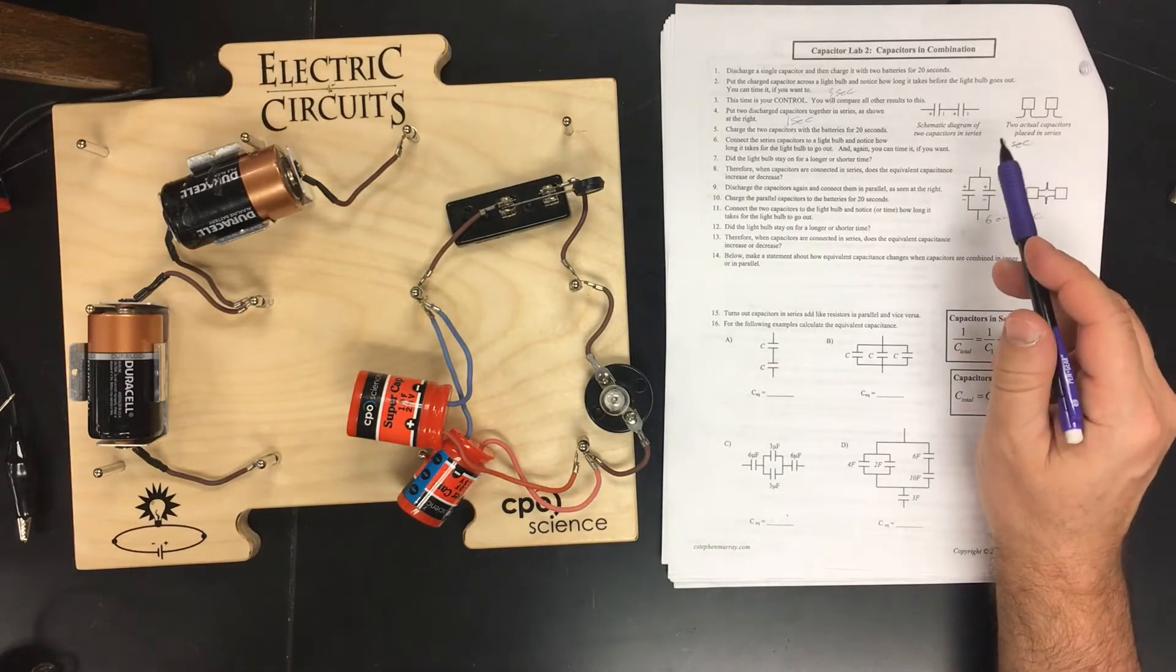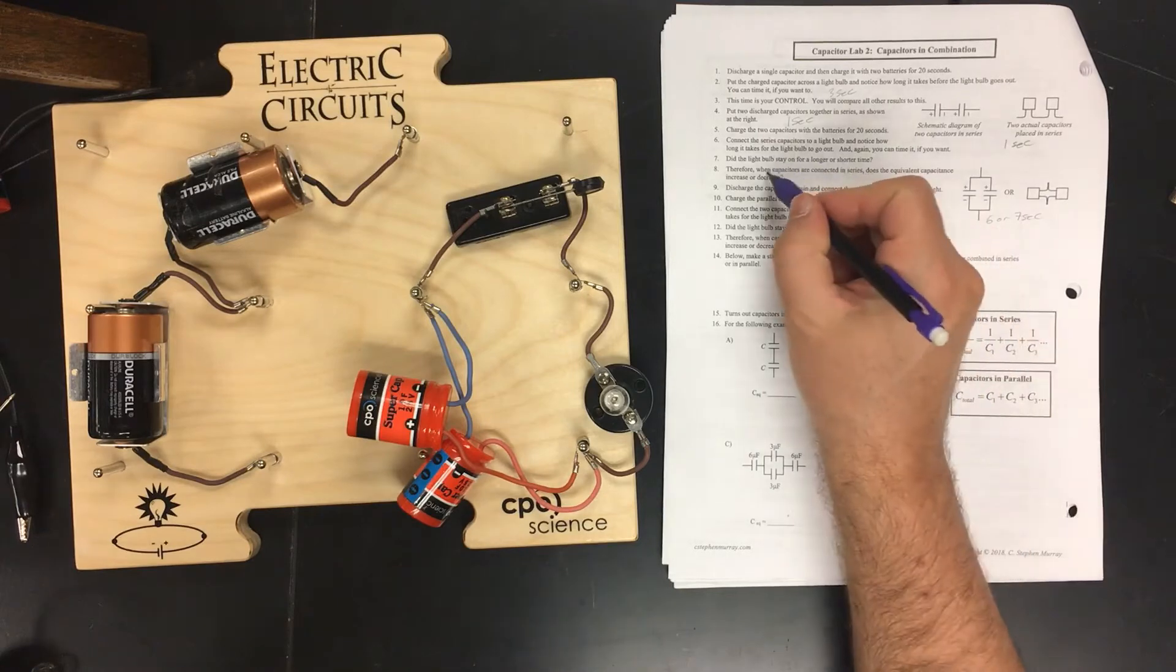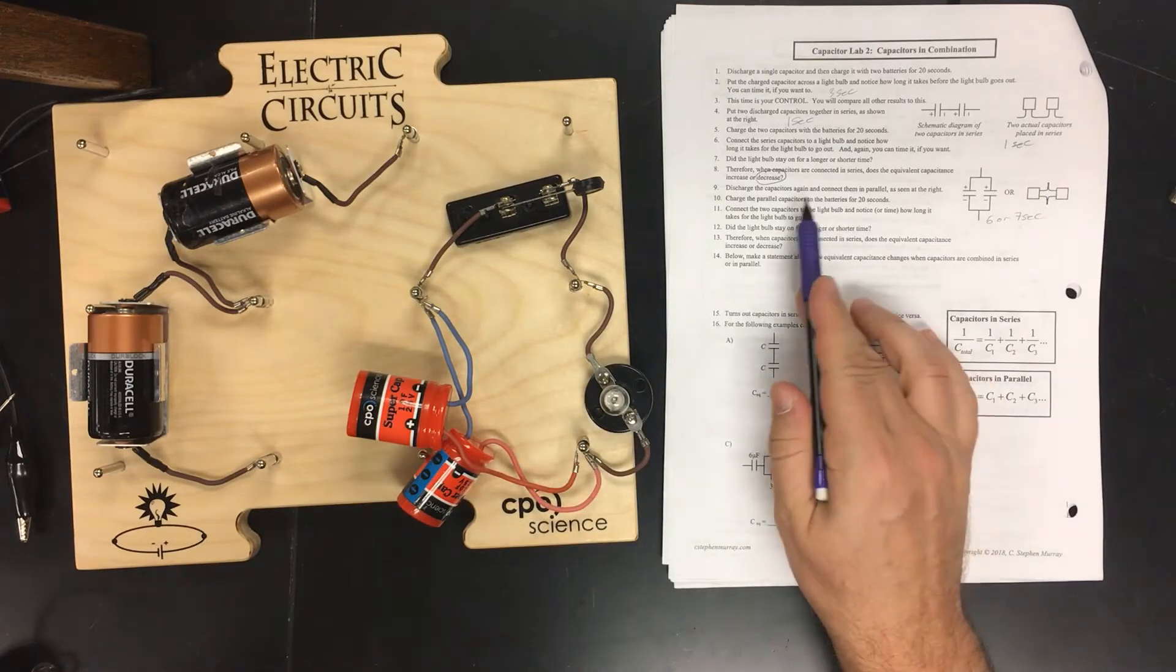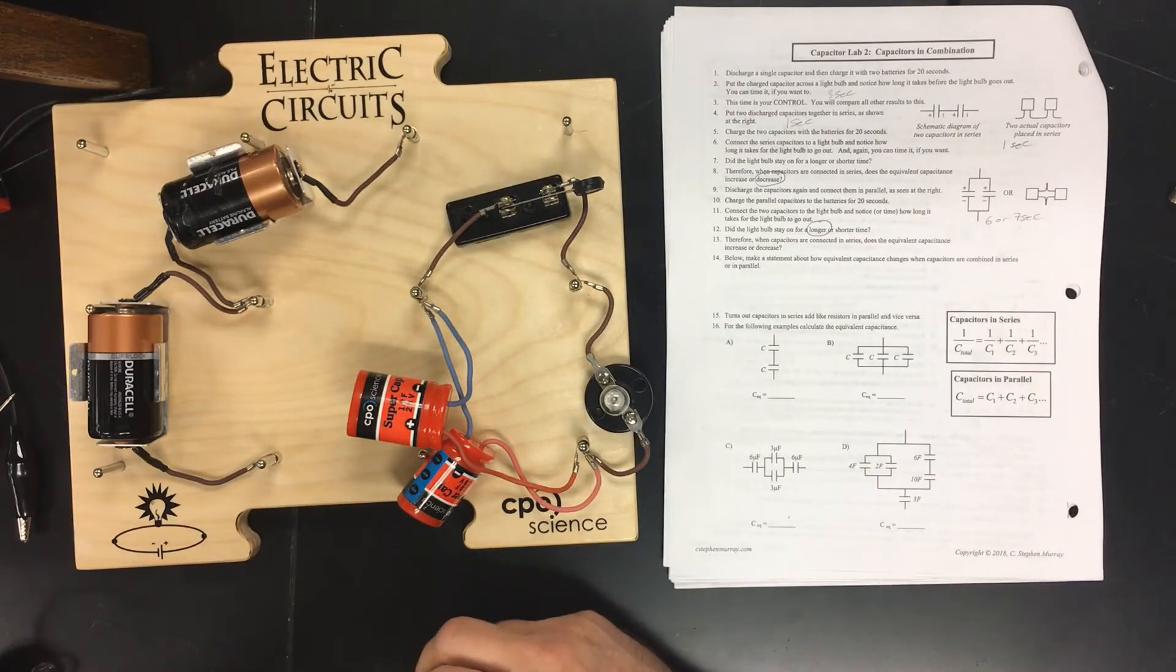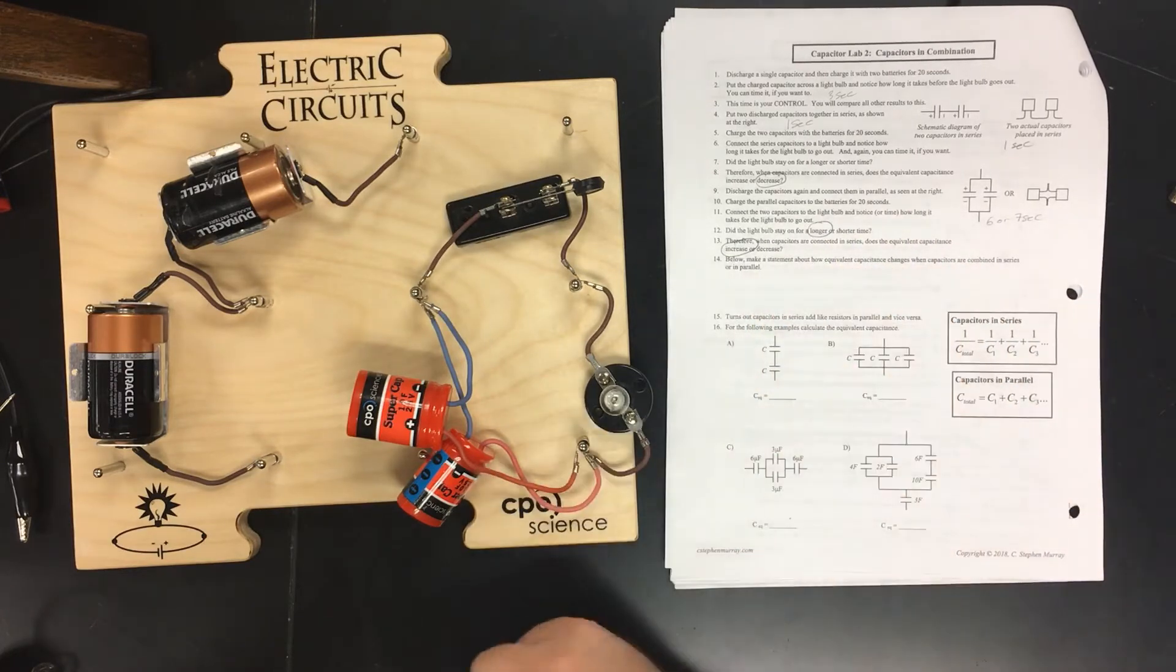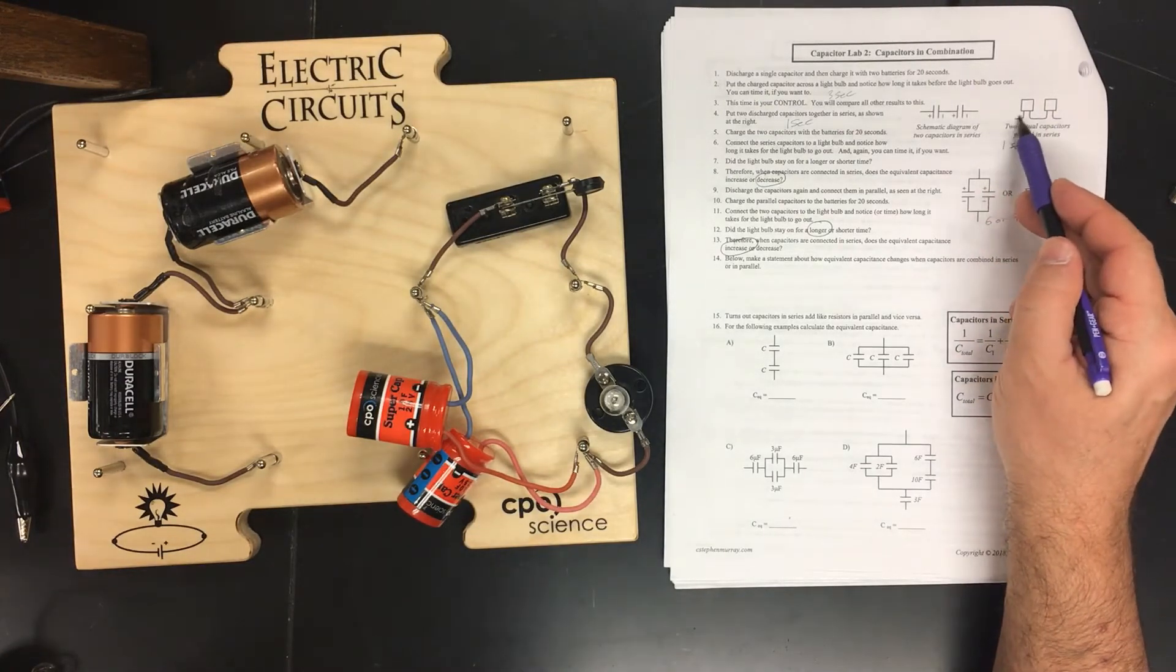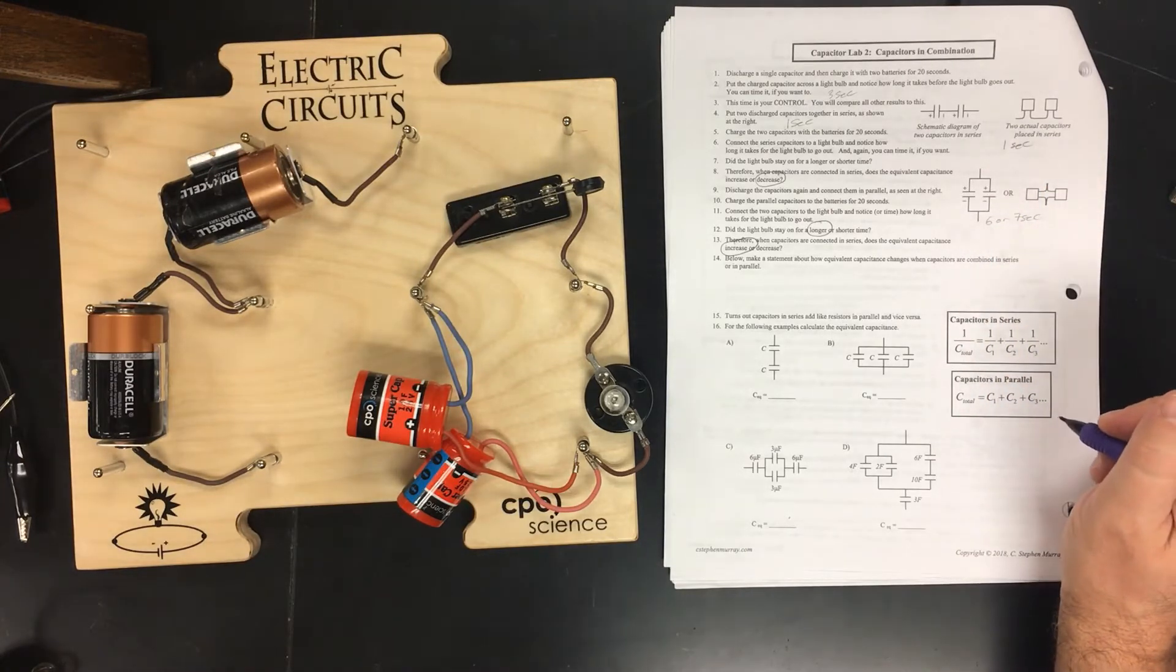Okay, so here's the question. Therefore, when the capacitors are in series, the equivalent capacitor decreases. It gets less. And actually the reason for that is each one is sharing the voltage, so each one only has half the voltage. Charging them in parallel, the light bulb stays on longer or shorter time? Longer. Therefore, in capacitors in parallel, the capacitance increases because now you have equal voltage but more storage. Think about them like water tanks. Here each one can store only half the voltage. Here, same voltage but twice as much.